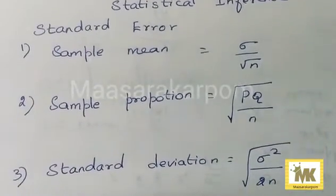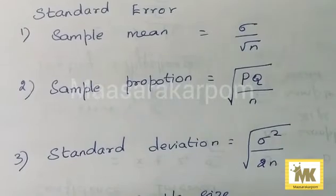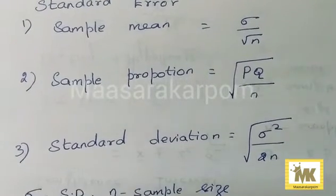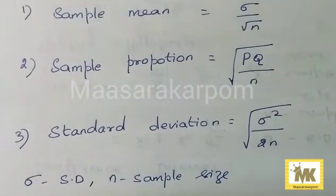Sigma squared by 2n within root, where sigma is standard deviation of the population and N is sample size. It is population and proportion P.